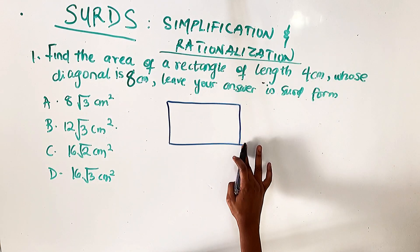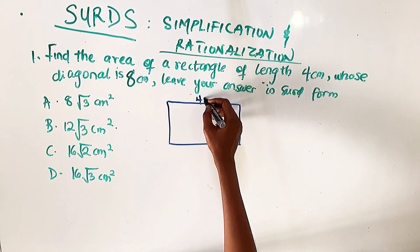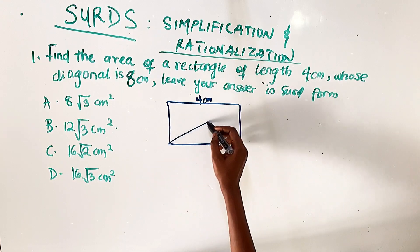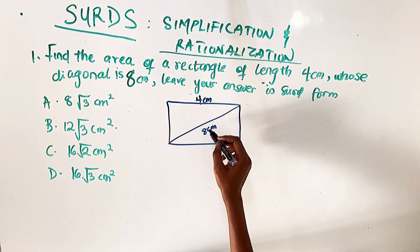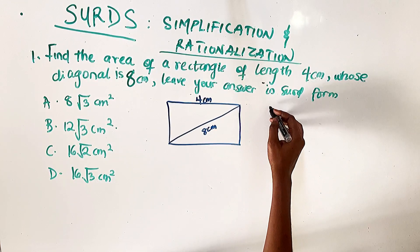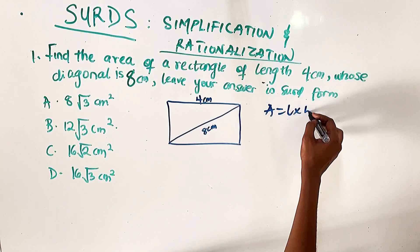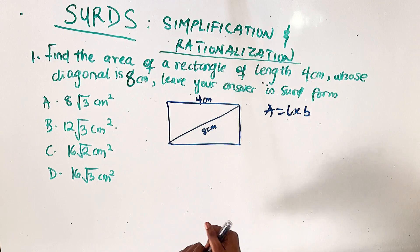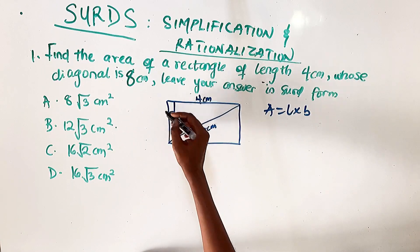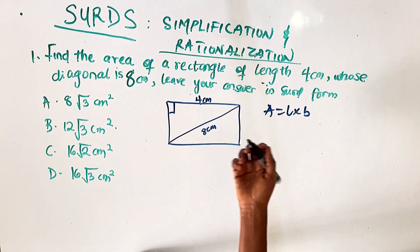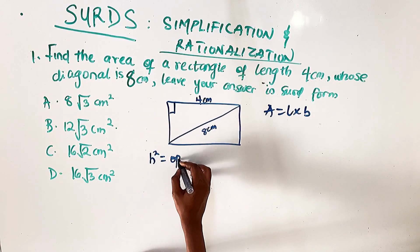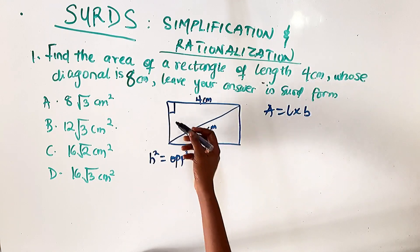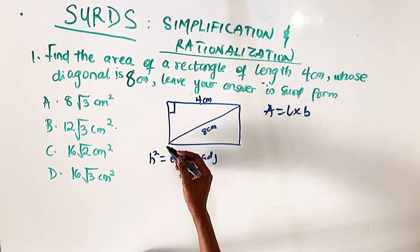The length is four centimeters. The question doesn't give the breadth but gives the diagonal as eight centimeters, and it's asking us to find the area. We know that area of a rectangle is length times breadth, but we're not given the breadth. So we have to find the breadth using the Pythagoras theorem, which says hypotenuse squared equals opposite squared plus adjacent squared in a right-angle triangle.